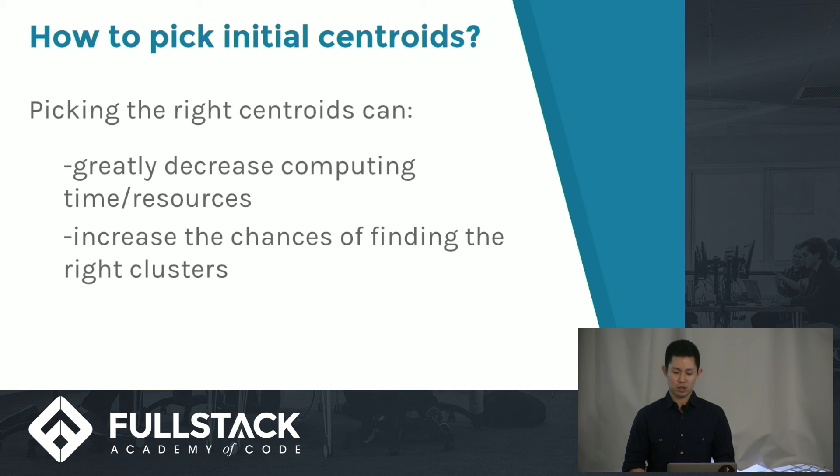It's also very important to pick a good initial centroid. By picking a good centroid, you'll save a lot of computing time and resources, and you'll increase your chances of finding the right cluster. If you pick an initial centroid that is too far off, the algorithm might never converge. Some approaches to pick the right clusters involve other clustering algorithms, which unfortunately I won't be able to touch upon today.